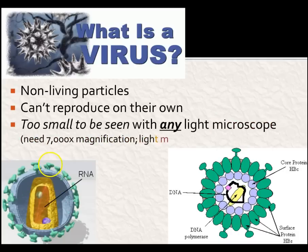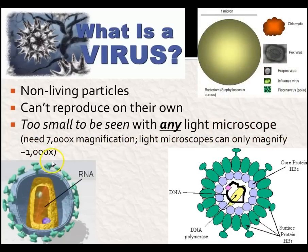Viruses are also too small to be seen with any light microscope. They need about 7,000x magnification, and light microscopes can really only magnify about 1,000 times.